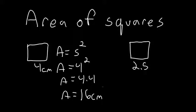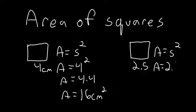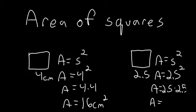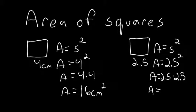Our area equals 16 centimeters squared. Same thing with the 2 and a half: area equals side squared, area equals 2 and 5 tenths squared, so our area equals 6 and 25 hundredths centimeters squared.